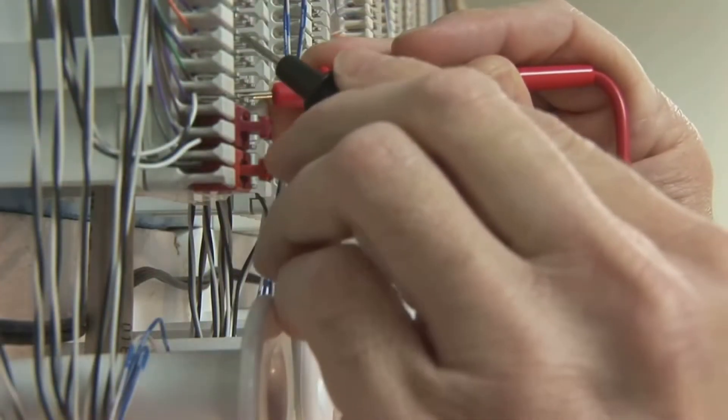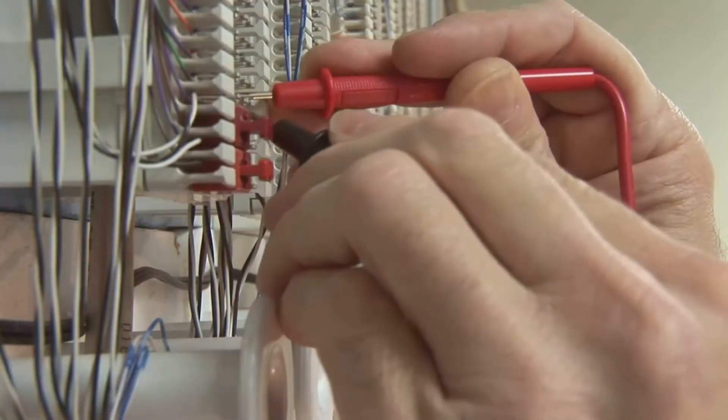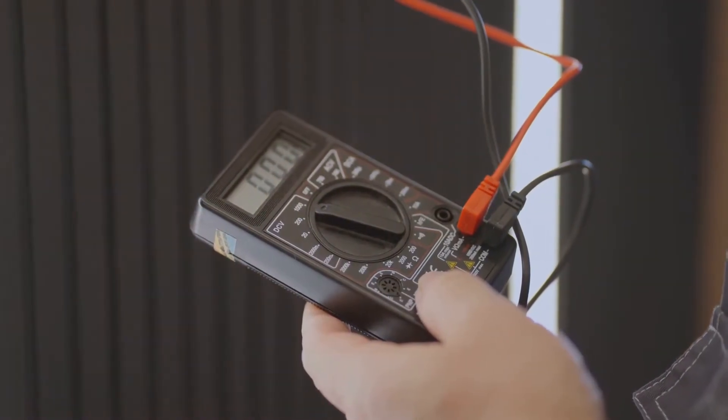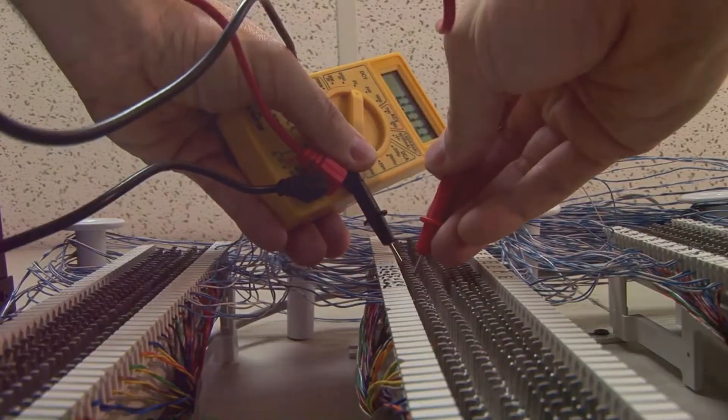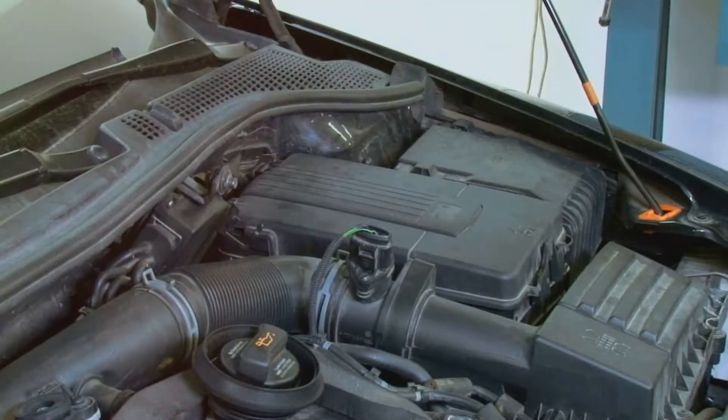Touch the probes together - the meter should read zero or close to it. This tells you the probes and meter are working correctly. Now we're ready to test our solenoid.